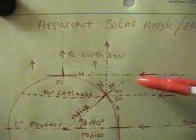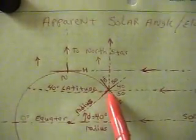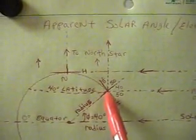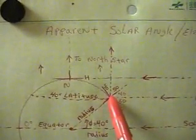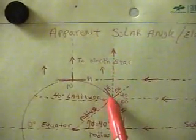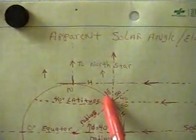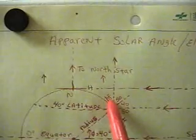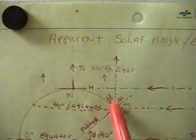The angle of the North Star, when you are standing here at 40 degrees and you look at the North Star with respect to the horizon, is 40 degrees. It's equivalent to your latitude.